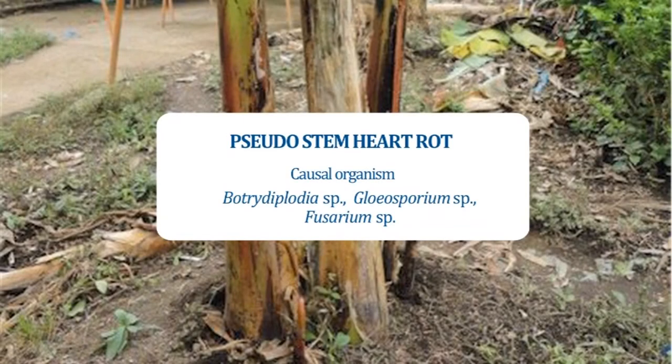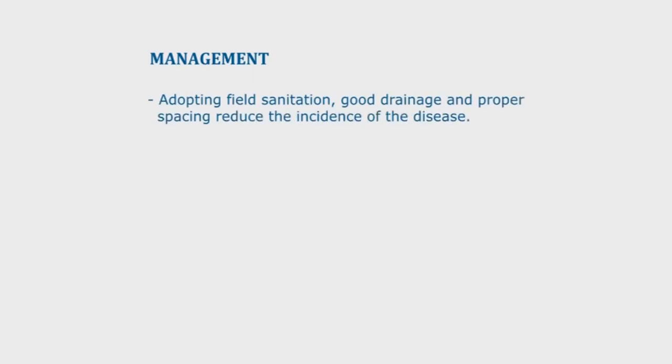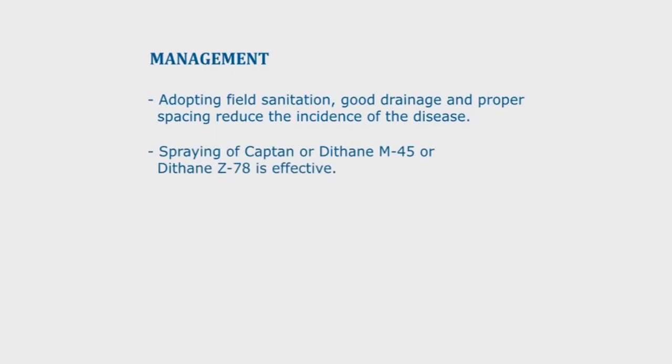The next disease is pseudo-stem heart rot, caused by Botryodiplodia species, Gloeosporium species and Fusarium species. The first indication of heart rot is the presence of heart leaves with part of the lamina missing or decayed. In severe cases, the inner leaves of the crown first turn yellow, then brown and finally die. In more severe cases, all the leaves and plant die. Management includes adopting field sanitation, good drainage and proper spacing to reduce disease incidence. Spraying with Captam or Dithane M45 or Dithane Z78 is effective.